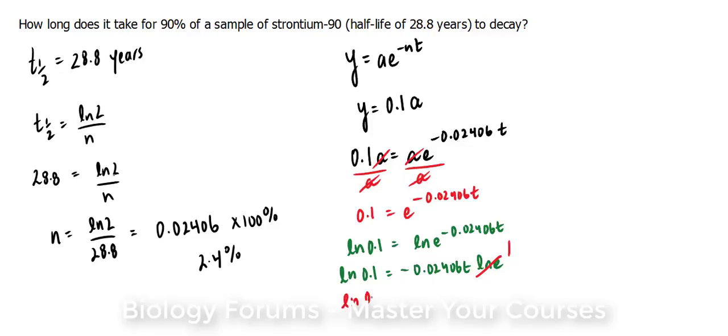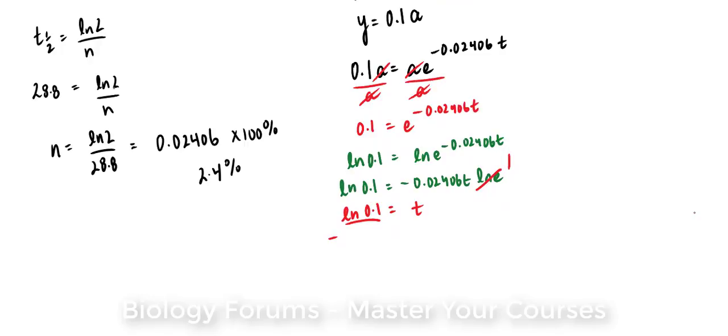ln 0.1 is equal to t, which I'm skipping a step here, but I'll divide both sides by negative 0.02406. We end up with this. Let me just increase the space here.